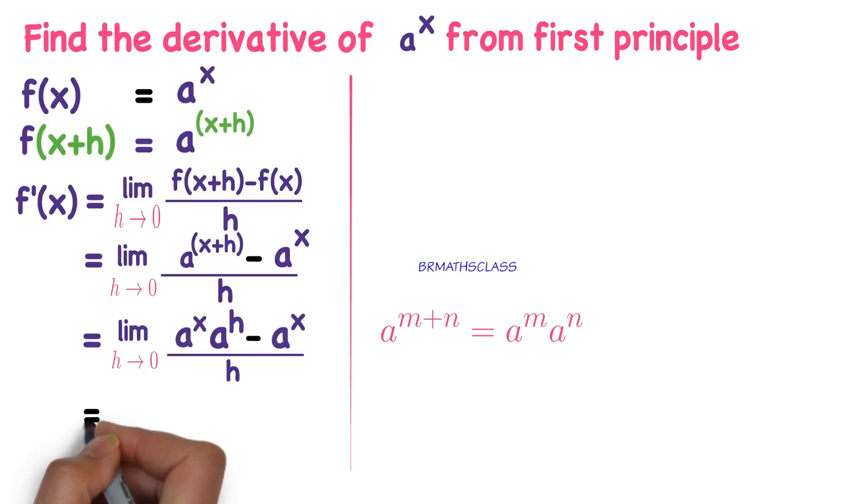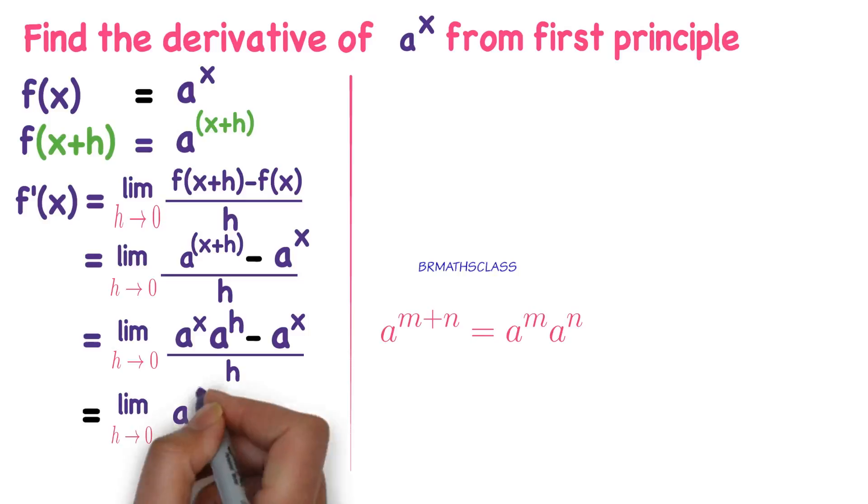Now continuation of this. Limit h tends to 0. You observe here in the numerator we can take a power x common. In first term a power h is remaining minus. In second term we take a power x common. So minus 1 divided by h.